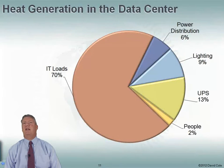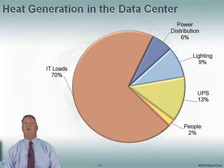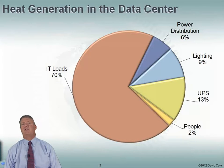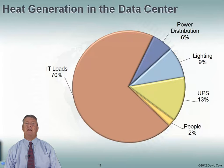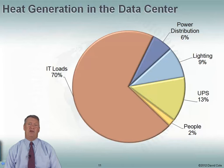Where is the heat generated in the data center? 70 to 90% of it comes from our IT load — servers, switches, routers, and other IT equipment generate a lot of heat. But there are some other things as well: power distribution (whenever power runs through a wire, that wire heats up), lighting generates heat, UPSs generate heat from their losses, and people in the data center generate heat.